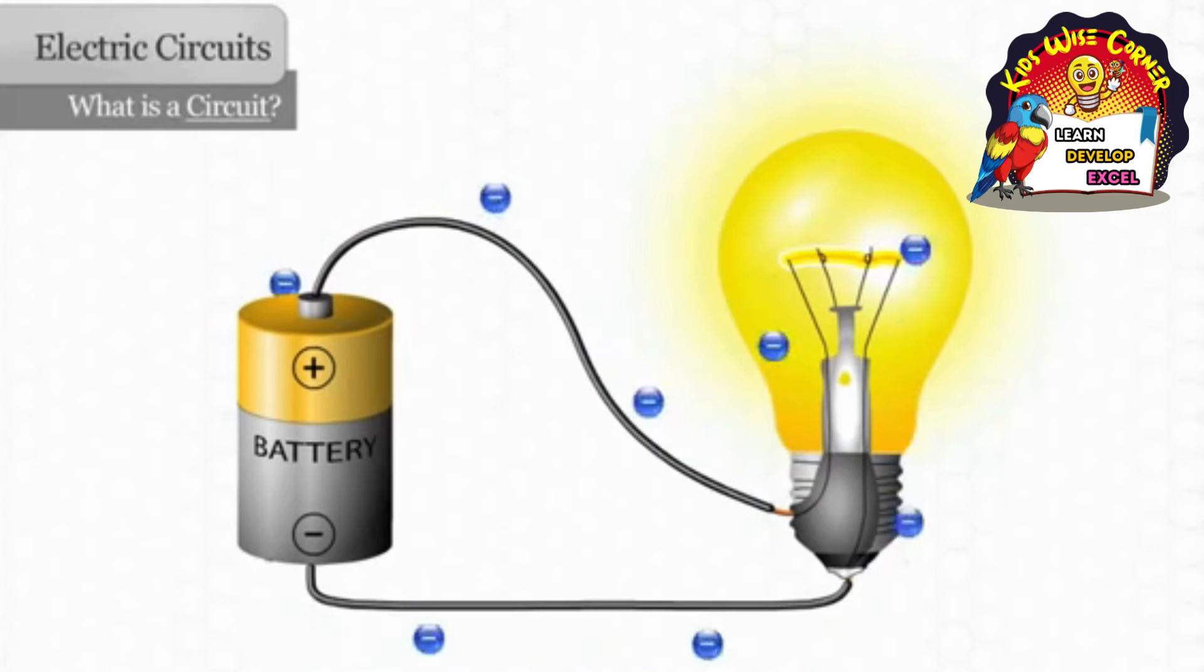When the electrons go through the filament, some of the electrical energy is changed to heat and light energy.